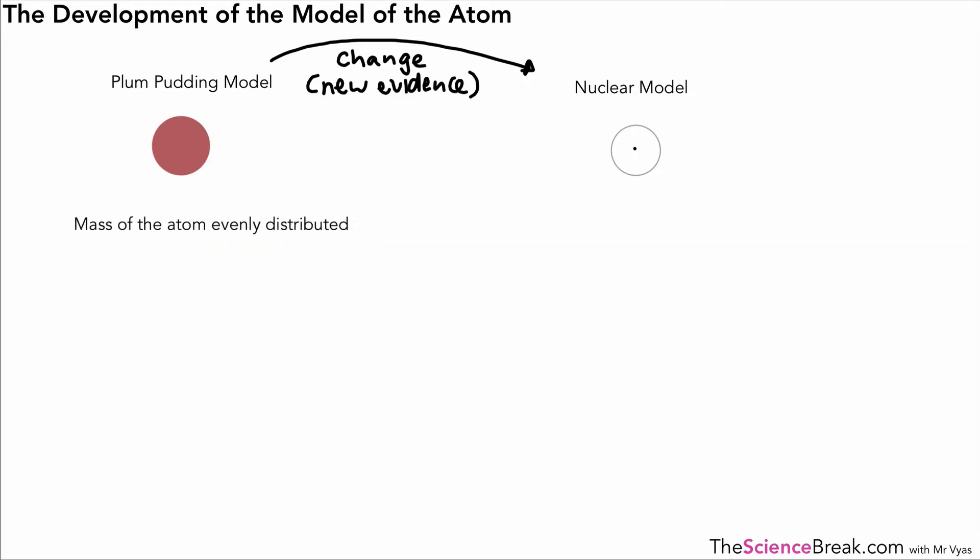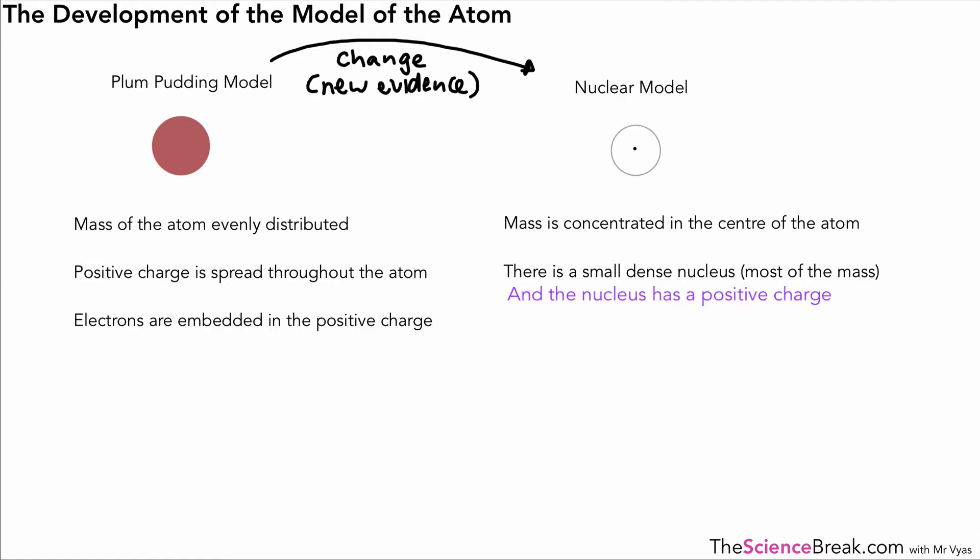It's worth being able to compare the two. The plum pudding model said that the mass of the atom was evenly distributed throughout that sphere shape, whereas in the nuclear model we discovered that the mass is concentrated in the center of the atom. The plum pudding model had a positive charge spread throughout, whereas the nuclear model said that there was a small dense nucleus where most of the mass was.